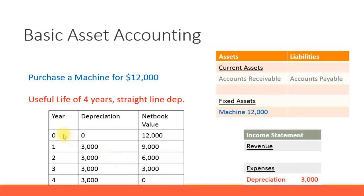So initially it's $12,000. Depreciation in the first year is $3,000, then the net book value of the asset is $9,000. Another depreciation of $3,000 in the second year, it becomes $6,000. Another depreciation of $3,000 in the third year, it becomes $3,000. And finally after the fourth year, there's no more net book value because the machine has exhausted its useful life of four years. This is how the basic asset accounting works with regard to financial postings.